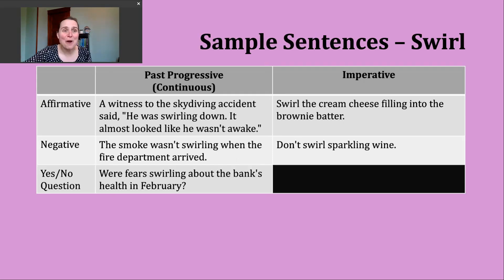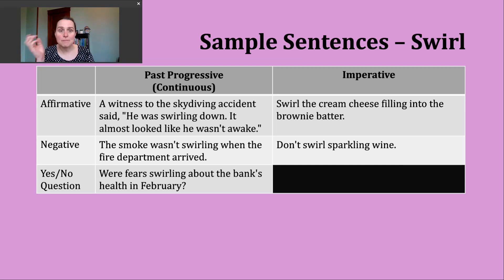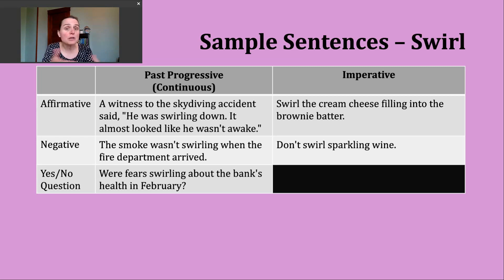Now let's continue using our verb of the day in a couple of different verb tenses. Today we're going to practice the past progressive and the imperative. We use the past progressive to talk about an action that was ongoing in the past. Many times it describes that ongoing action being interrupted by another action, used in conjunction with the simple past tense. But you might also see past progressive used on its own, just noting that some action was continuing during a certain period.